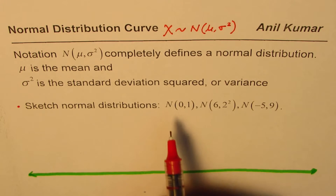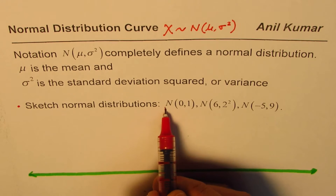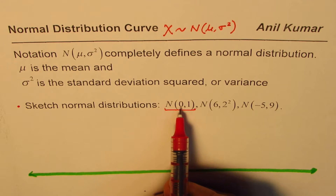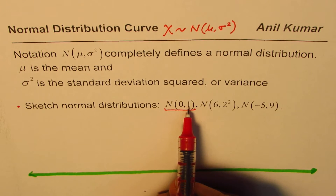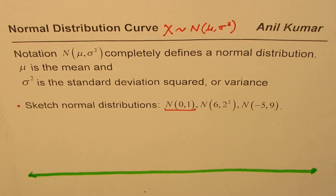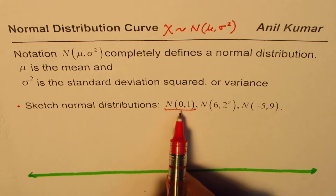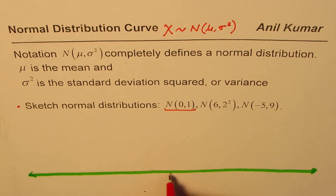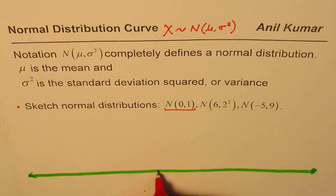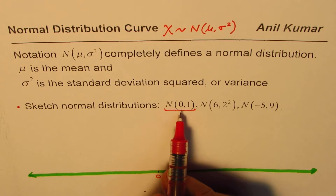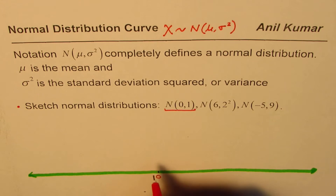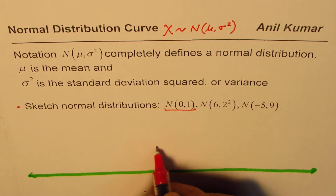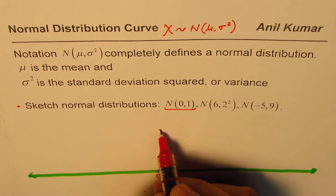Let me begin with the first one: N(0, 1), where 0 is the mean and 1 is the standard deviation. This is the standard normal curve, used often to calculate probabilities. At 0, we have the mean, mode, and median — all three central tendencies — so this is where the peak of the bell-shaped curve occurs.